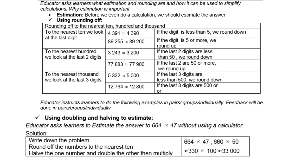Look at the first example: rounding to the nearest ten, hundred, and thousand. If we round to the nearest ten, we look at the last digit. For instance, 4,391 rounds to 4,390 because 1 is below 5, so we round down. The next one, 89,255 — we round up because 55 rounds up, giving 89,260. If the digit is 5 or more, we round up; if it's less than 5, we round down.